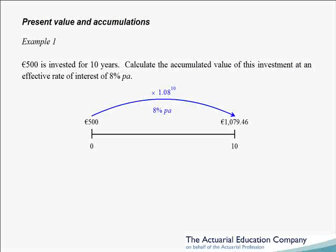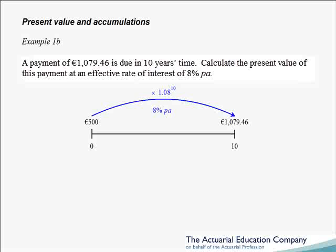However, we are often more interested in calculations the other way around. Suppose we now have a payment of 1079 euros and 46 cents which is due in 10 years time, and we wish to calculate the present value of this payment at an effective rate of interest of 8% per annum. By present value, we mean what is the value of the 1079.46 payment at time 0 — or how much should we invest at time 0 in order to meet this payment at time 10? This is a very common question, for example in life and pensions, where we may have liabilities to meet in the future and need to know how much to invest now, i.e. the premiums, in order to meet these payments.